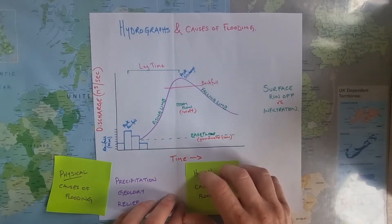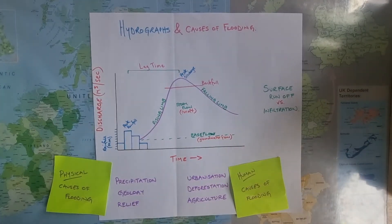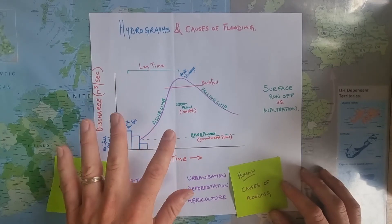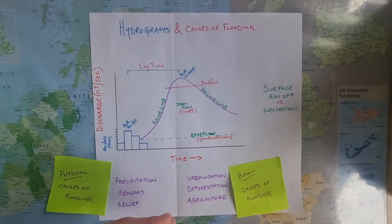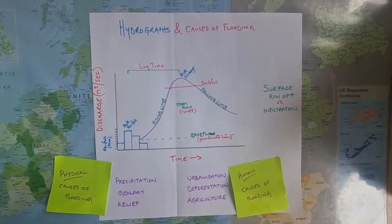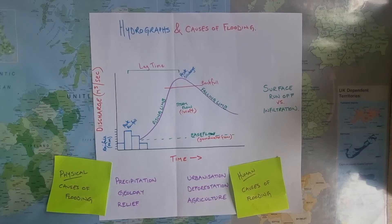Now we move across to some of the human causes of flooding. Urbanisation first — if we've got urban areas, towns and cities, then we've got tarmac, drains, and sewers, which are all going to lead to a flashy response, a short lag time, and a flood. Deforestation — trees slow the water down through the drainage basin, so if we have tree removal, we get a flashy response with a steep, fast rising limb, a short lag time, and a flood. And agriculture — particularly with relation to exposed soil. If we have exposed soil, we're going to get a flashy response. This is especially the case if you plough up and down the hill rather than around the contours, because up-and-down ploughing promotes much more runoff.